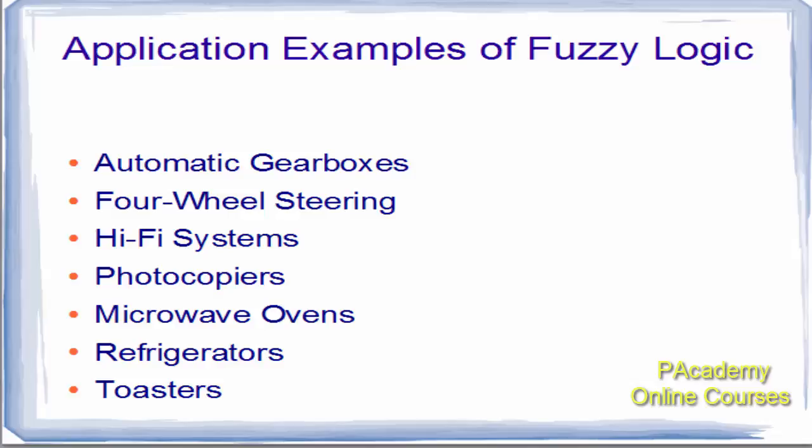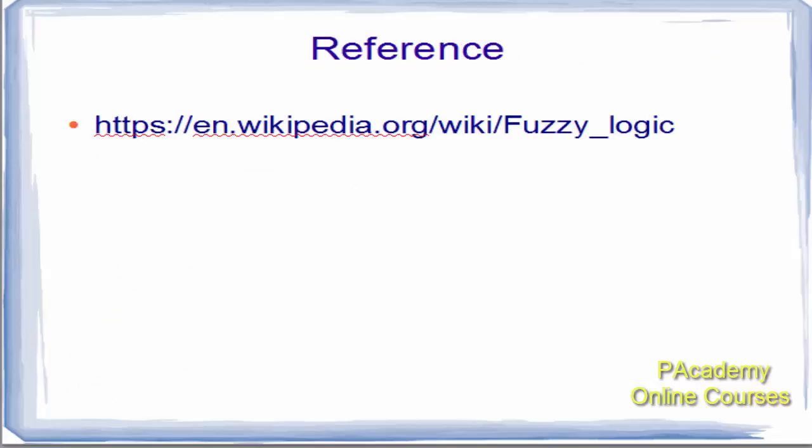Application examples of fuzzy logic include automatic gearboxes, four-wheel steering, hi-fi systems, photocopiers, microwave ovens, refrigerators, and toasters. That's all for fuzzy logic system application and understanding.